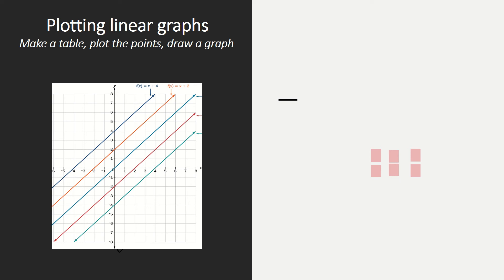When you're going to plot linear graphs, you first need to make a table, after that you need to plot the points, and then you're able to draw a graph.